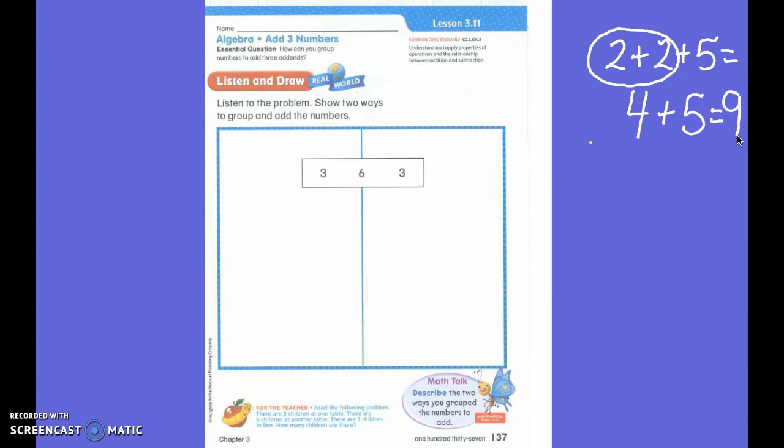And he has the answer, it is 9. So that's a lot easier than trying to figure out 2+2+5. So that's what we're going to be talking about today, is combining the numbers in different ways. So let's look at the numbers that we have on our paper.